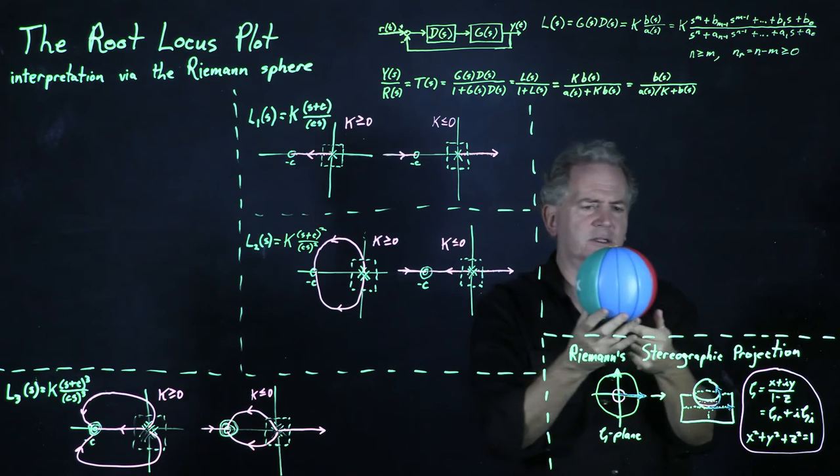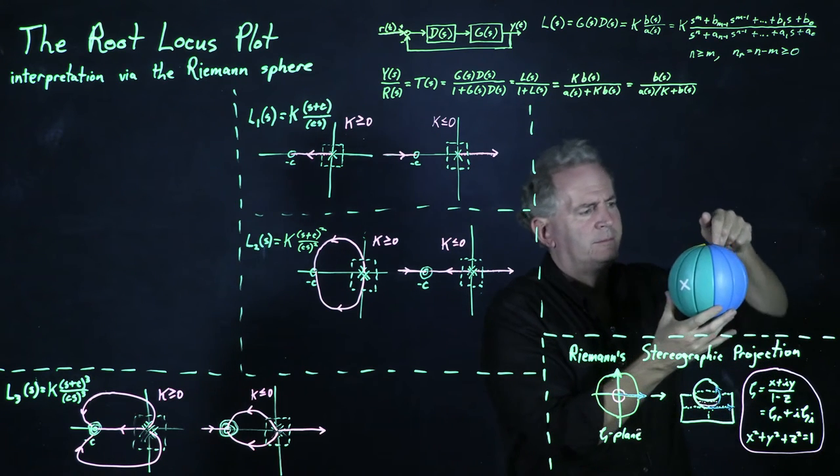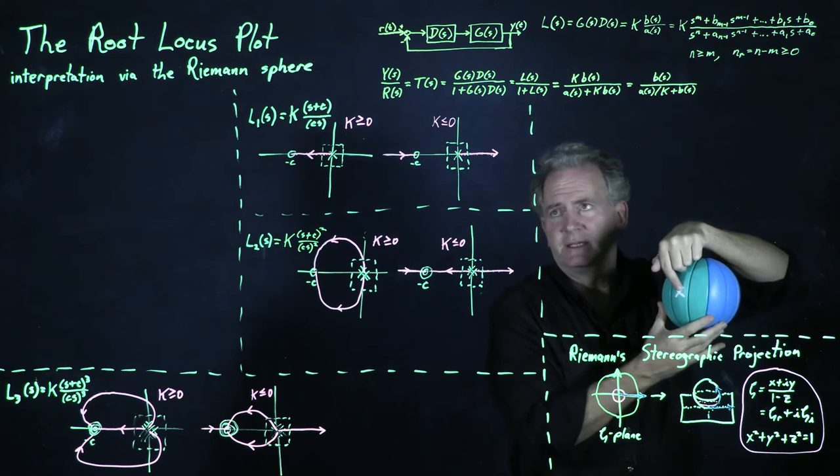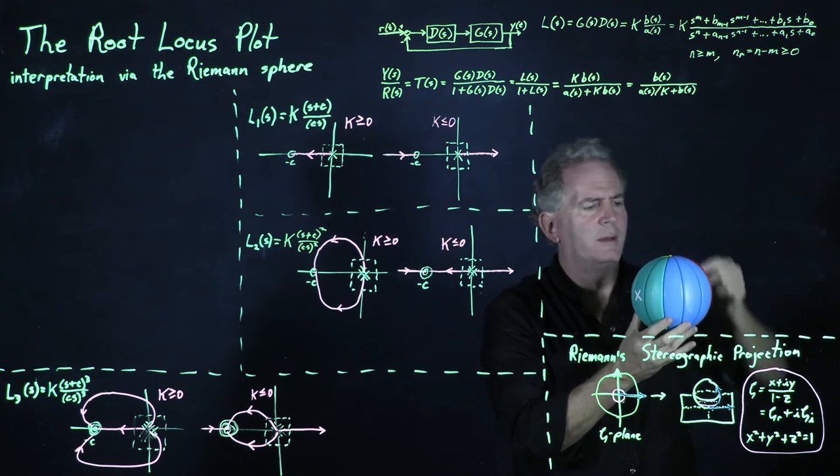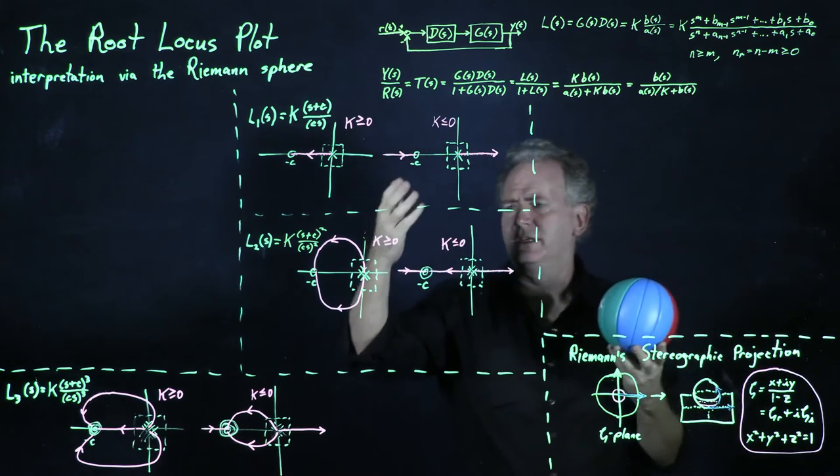So as k gets larger and larger, we go up this side of the sphere and down to the c. And then in the limit that c goes to infinity, we've come up to the red side instead of coming up the green side.